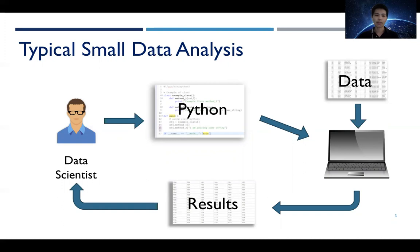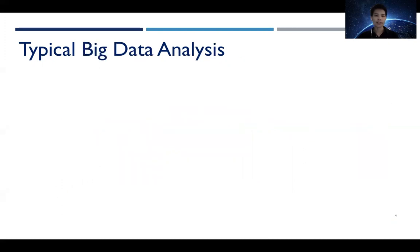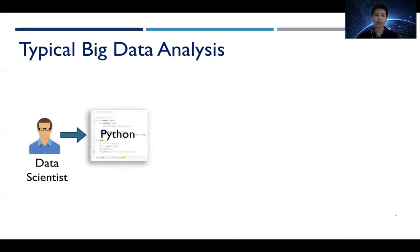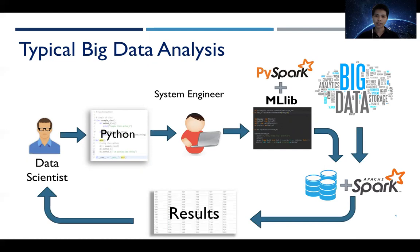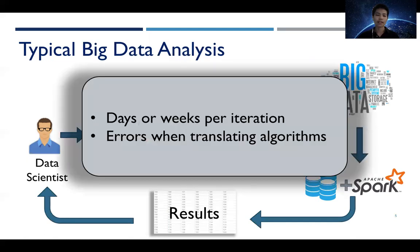At that point, the model and the pipeline will be transferred to run on a larger set of data. To go from small to big data analysis, the locally constructed pipeline will have to be translated and reconstructed using a distributed library syntax. They will then have to set up and fine tune a distributed compute engine and storage to be able to handle the massive amount of data. Problems with this workflow are that each iteration could take days, if not weeks, and there could be errors when translating the algorithms.